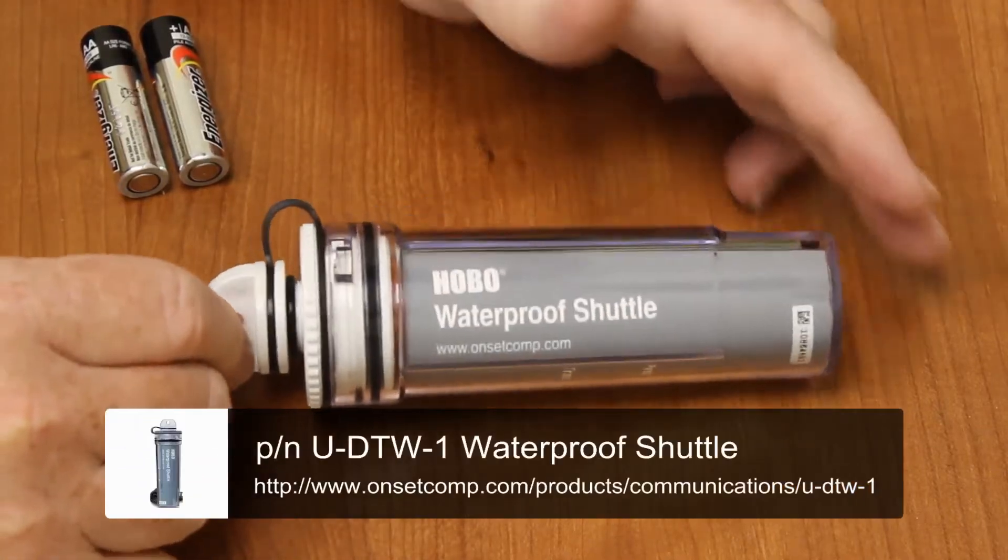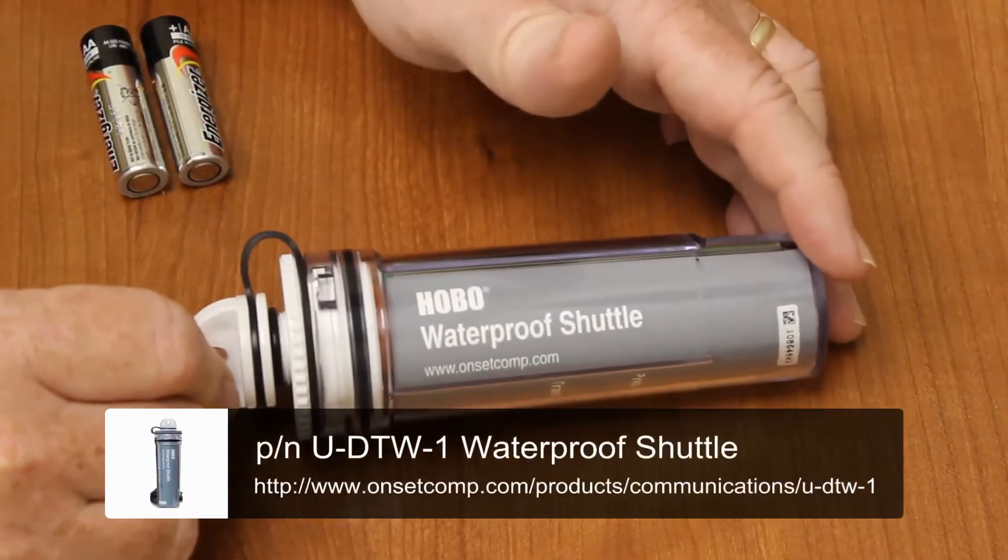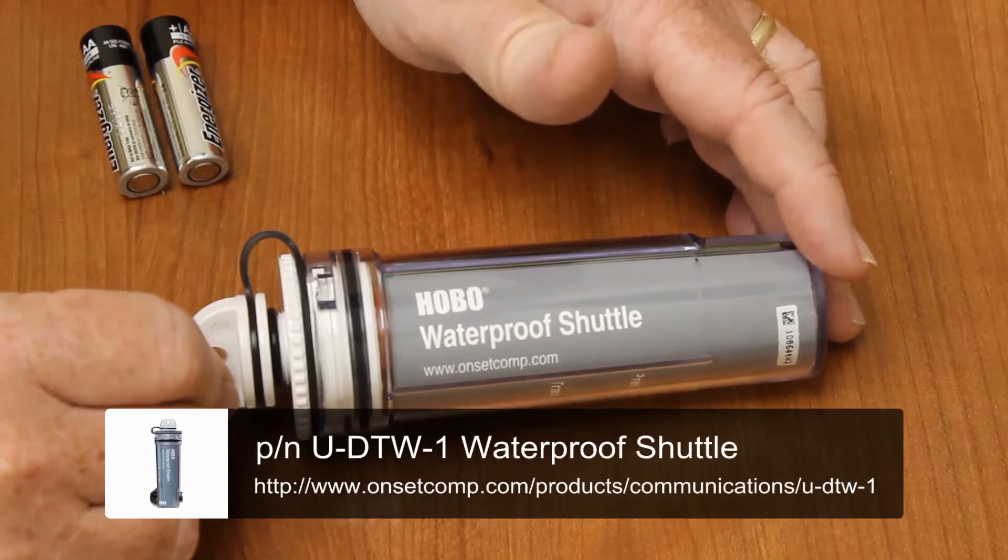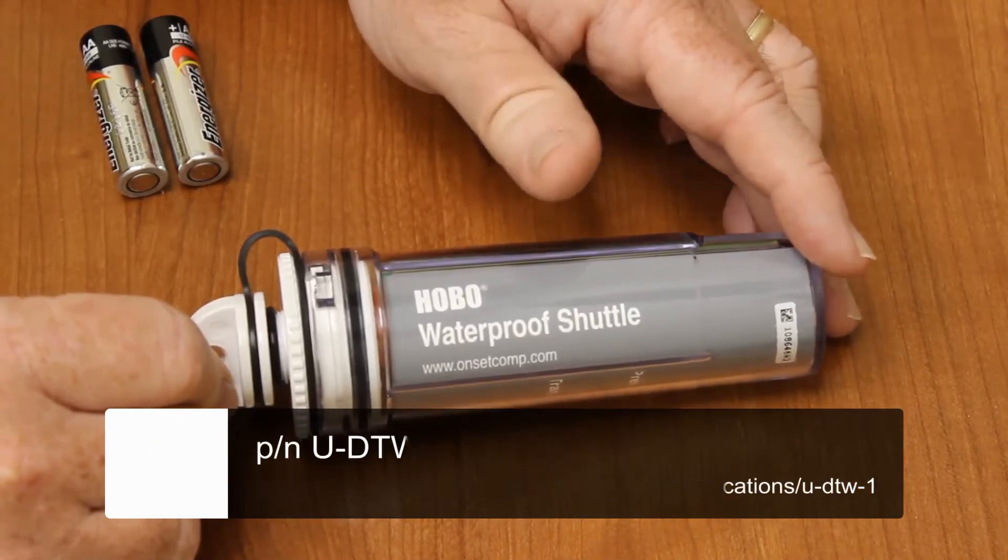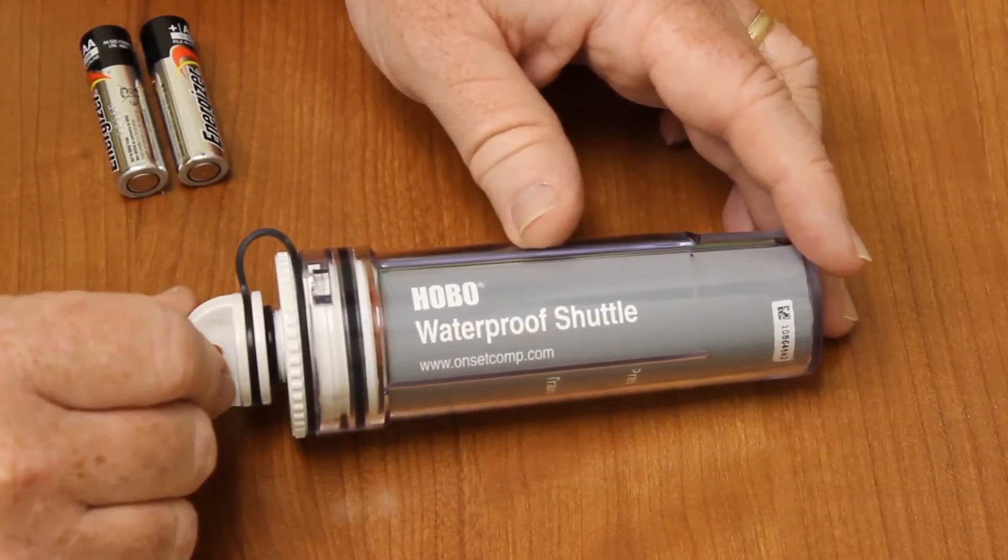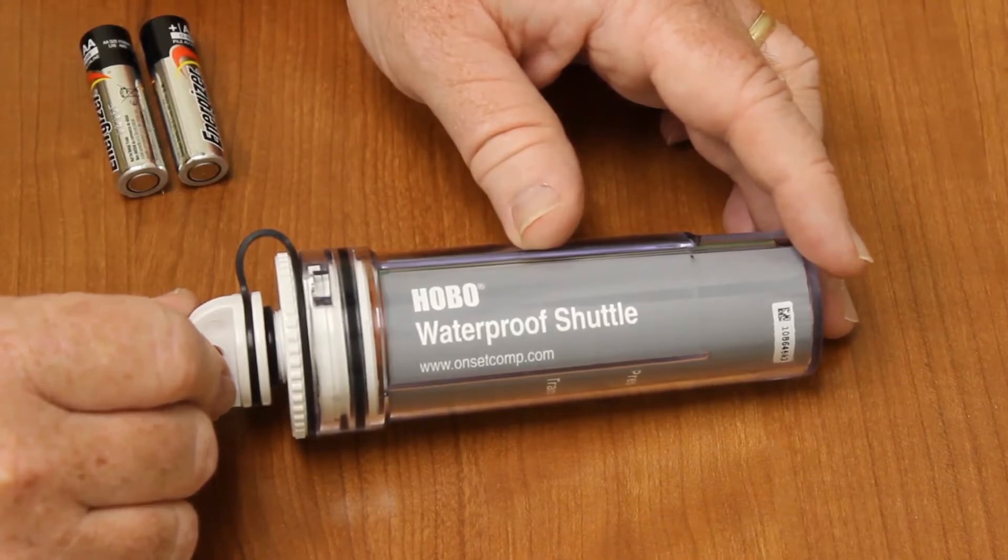In this video, we're going to show you the proper way to replace the batteries in the Hobo Waterproof Shuttle. The part number of that device is the UDTW-1.